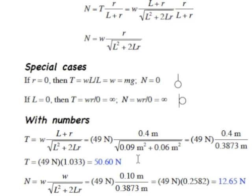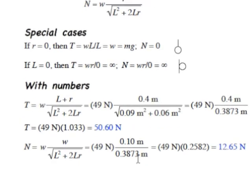Plugging in the actual numbers: the weight is 5 kilograms times 9.8 newtons per kilogram equals 49 newtons; L is 0.3 meters; R is 0.1 meters, so L plus R is 0.4 meters. Running those through the formula for tension gives 50.6 newtons — a little more than the weight, which is expected. Plugging the same numbers into the normal force formula gives 12.65 newtons that the wall pushes out on the ball.